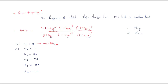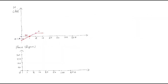At corner frequency 10, we have two zeros, so 2 × 20 = 40 dB per decade is added to the slope. The slope becomes plus 40 dB per decade from corner frequency 10, and the magnitude increases accordingly.